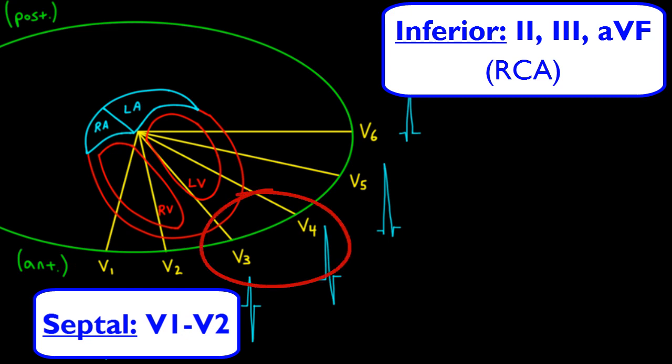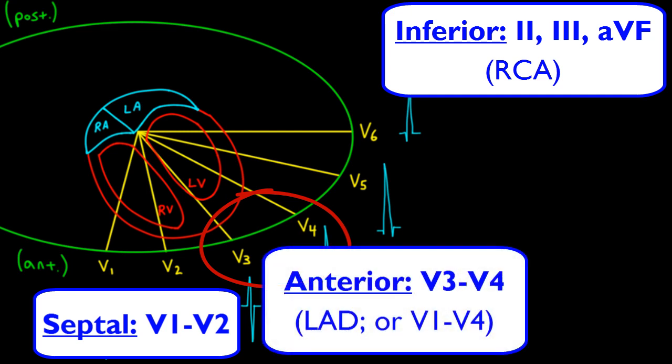And leads V3 and V4 are called the anterior leads. The anterior leads let us see things over the anterior portion of the left ventricle, as opposed to the anterior portion of the heart itself, which is comprised more of the right ventricle. The anterior portion of the left ventricle is supplied by the left anterior descending artery. Now I should mention that sometimes we include leads V1 and V2 along with V3 and V4 as representing the anterior leads.